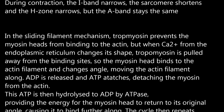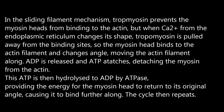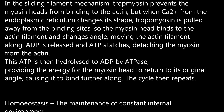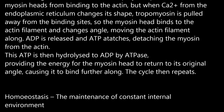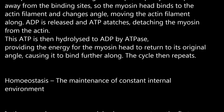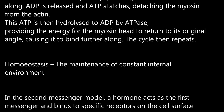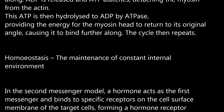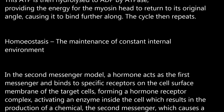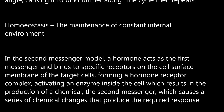In the sliding filament mechanism, tropomyosin prevents the myosin heads from binding to the actin, but when Ca2+ from the endoplasmic reticulum changes its shape, tropomyosin is pulled away from the binding sites. The myosin head binds to the actin filament and changes angle, moving the actin filament along. ADP is released and ATP attaches, detaching the myosin from the actin. This ATP is then hydrolysed to ADP by ATPase, providing the energy for the myosin head to return to its original angle, causing it to bind further along. The cycle then repeats.